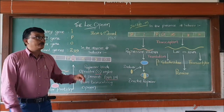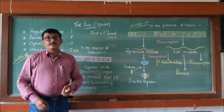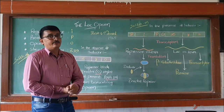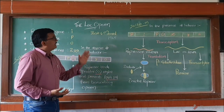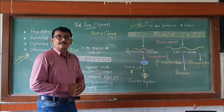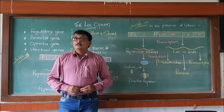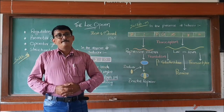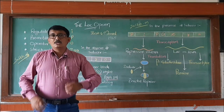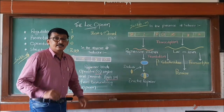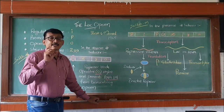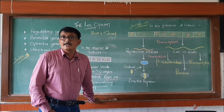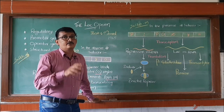The lac operon hypothesis was first proposed by Jacob and Monod in 1965, and they shared the Nobel Prize in the field of medicine. Lac operon explains the metabolism of lactose in prokaryotic organisms like bacteria. An operon means a cluster of genes — it is a functional unit or functional segment of DNA which consists of a cluster of genes.